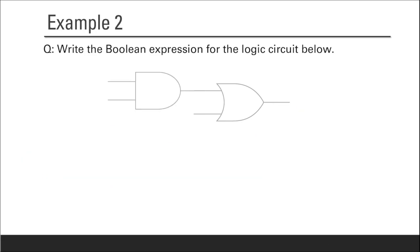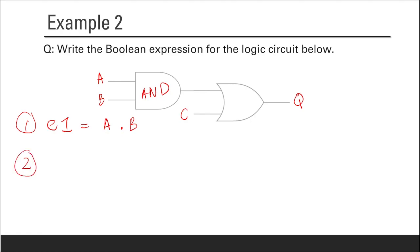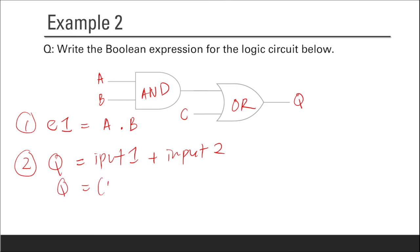Example 2: inputs are A, B, C and output is Q. There is one sub-expression: an AND gate taking inputs A and B, giving A dot B. For the final step, combine all sub-expressions — the output gate is an OR gate, so Q equals A dot B plus C.